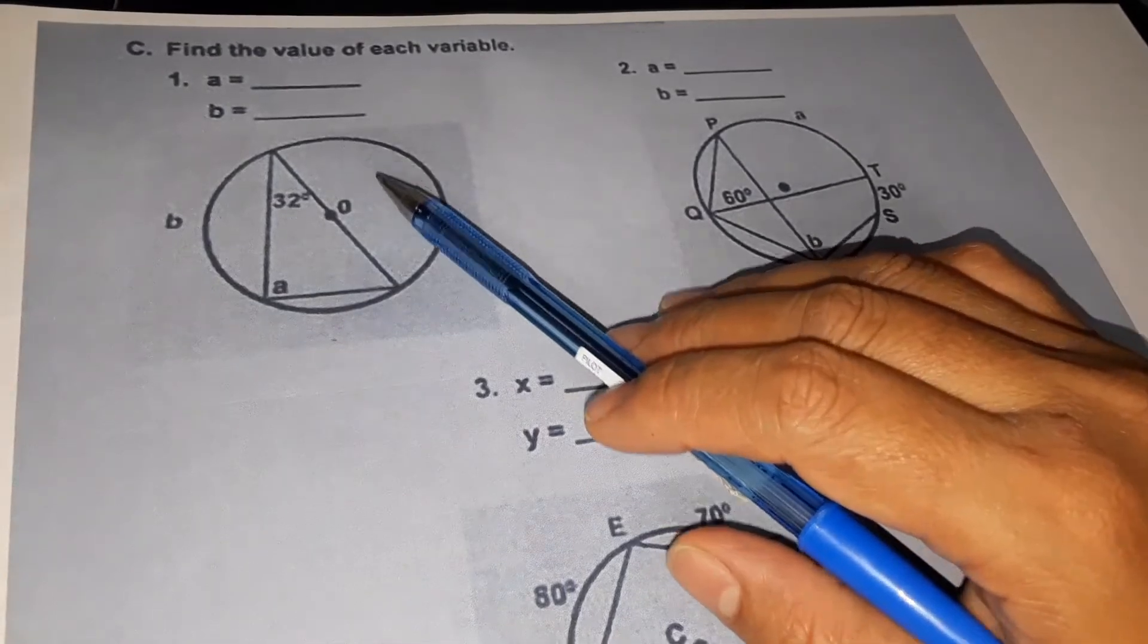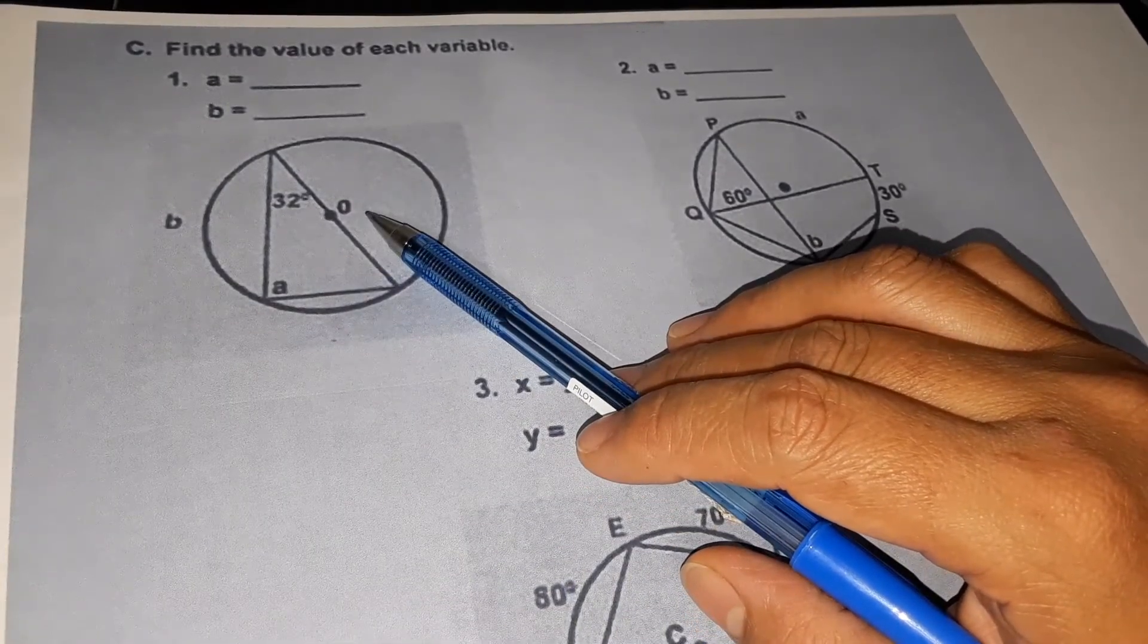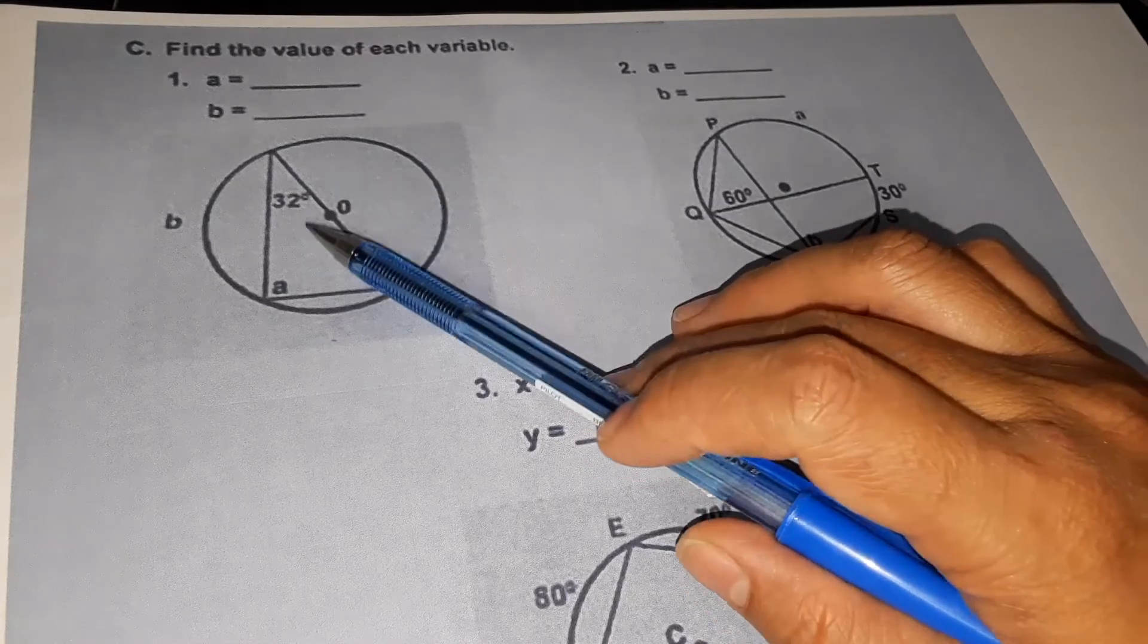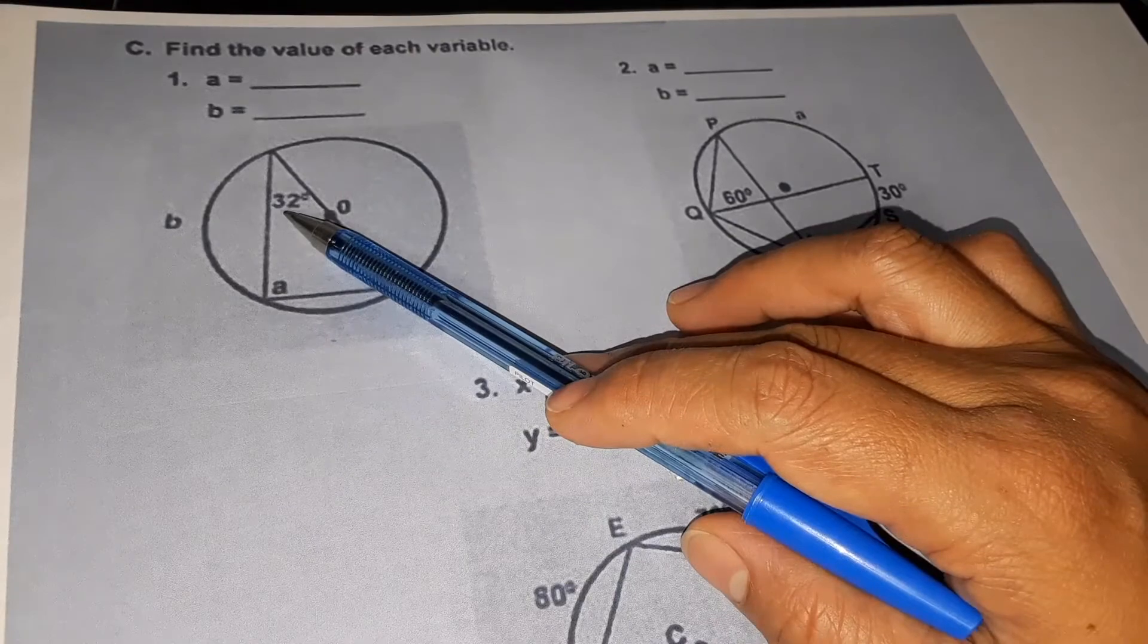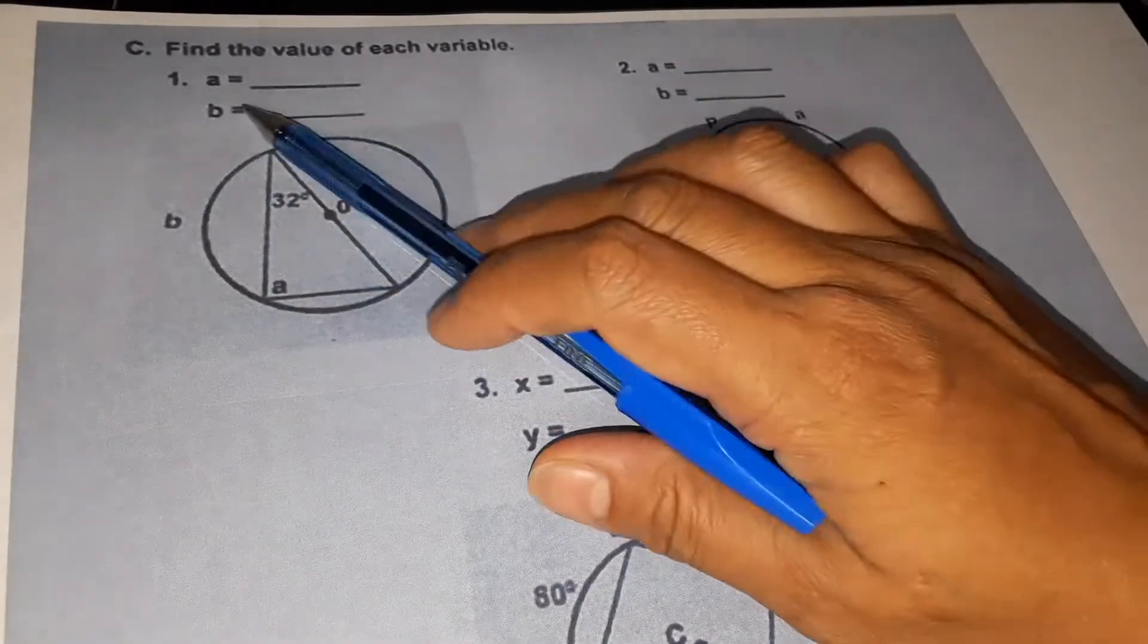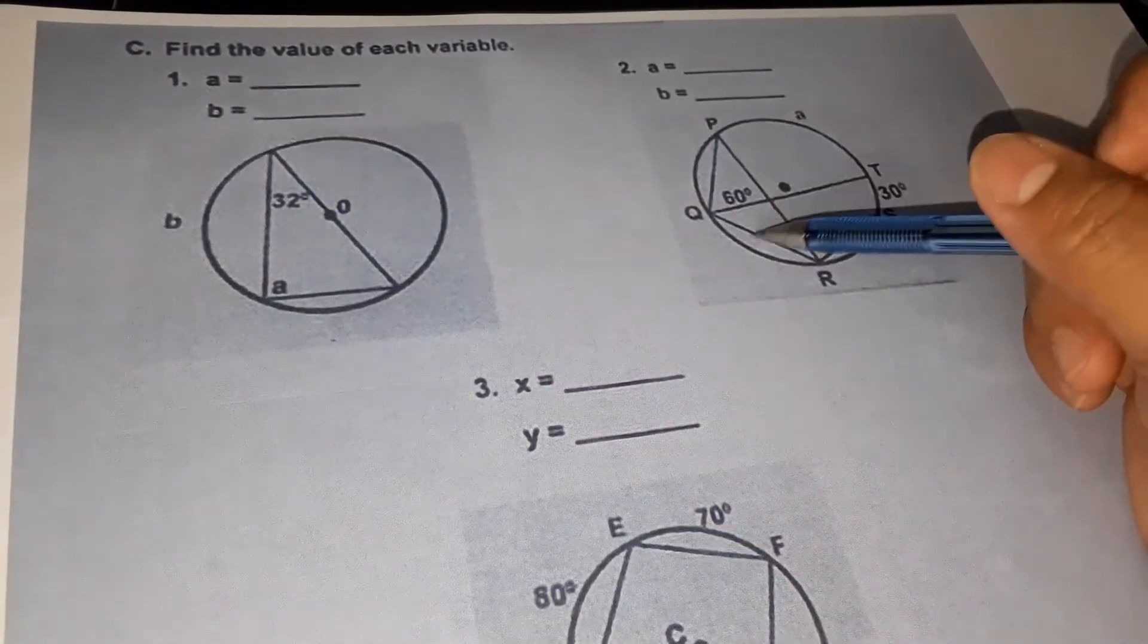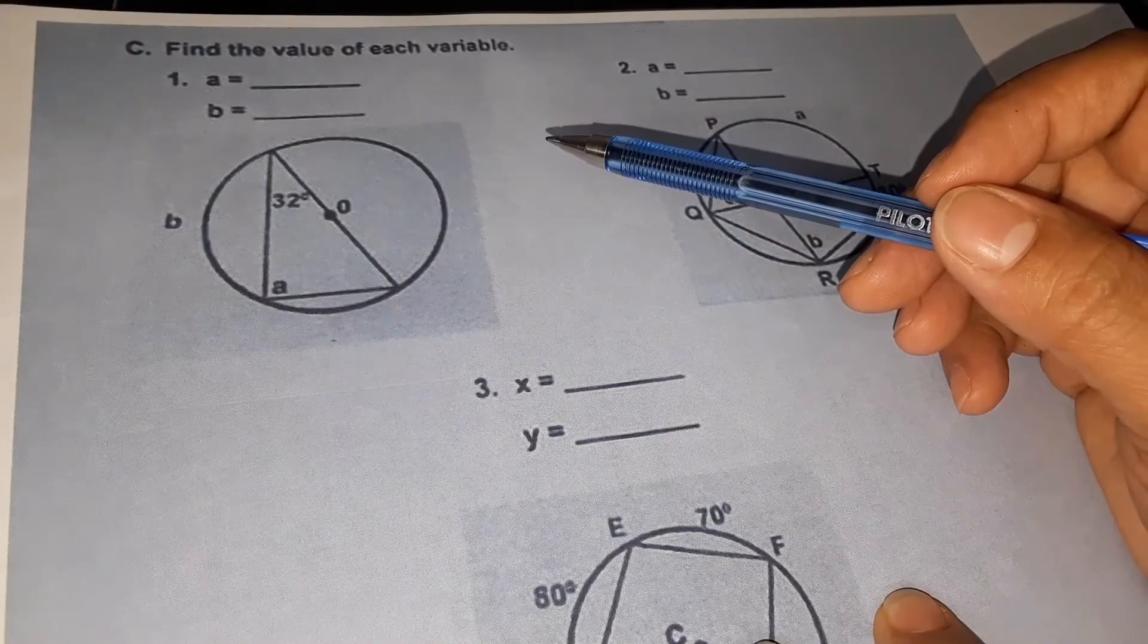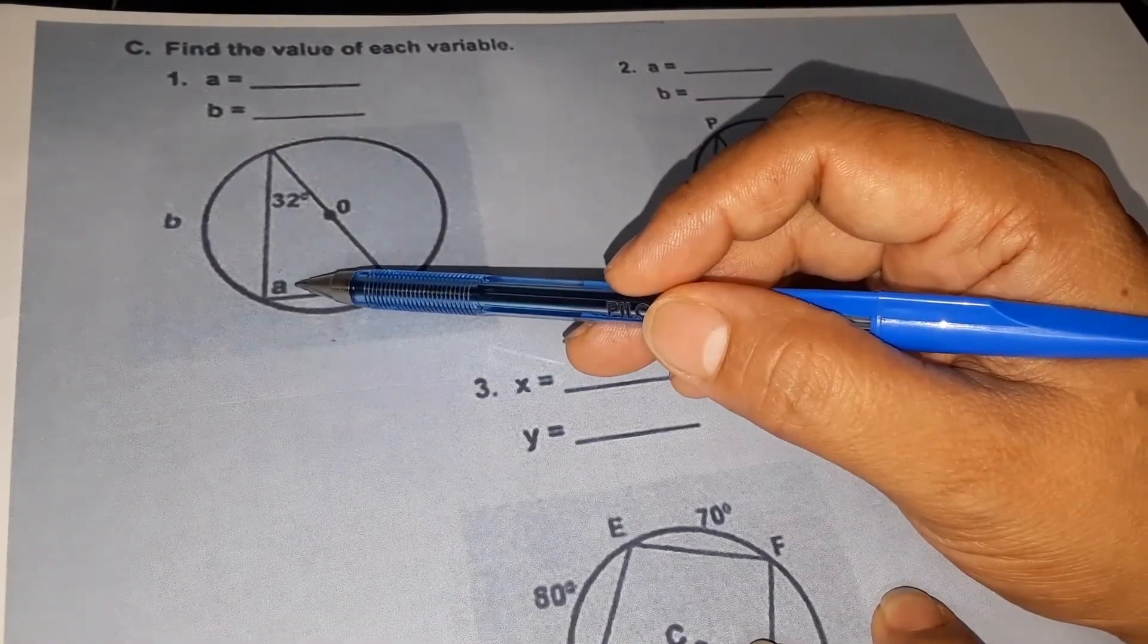In example number one, we have circle O with a given triangle. We have angle a and 32 degrees angle. Find the value of each variable, we have variable a and variable b.